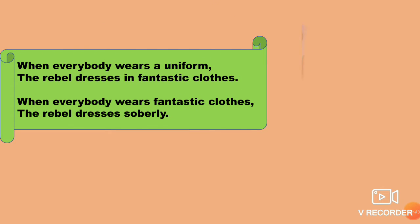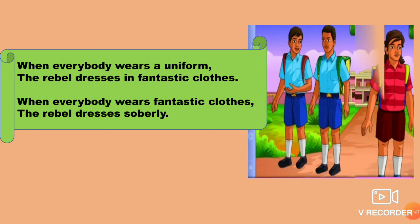When everybody wears a uniform, the rebel dresses in fantastic clothes. When everybody wears fantastic clothes, the rebel dresses soberly. So when everybody comes to school in uniform, the rebel comes dressed in different, colored clothes. And when everybody has colored clothes on, the rebel dresses as if he is very sad — soberly, meaning worn-out or very dull-looking dresses. He does this just to gain attention and show his difference from others.